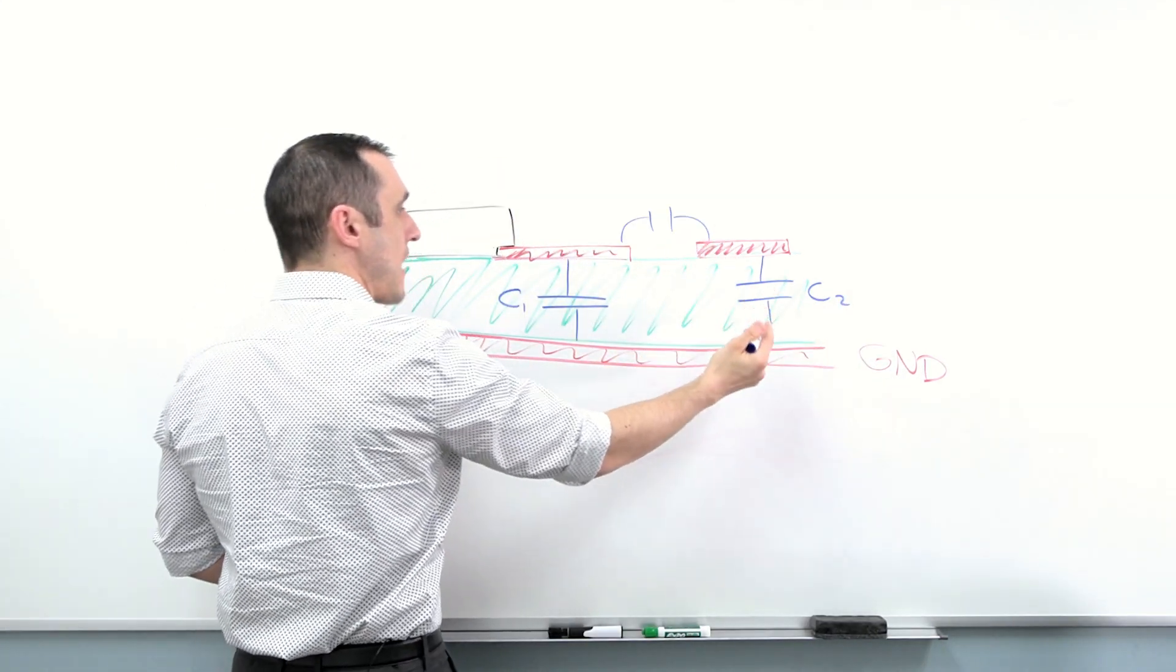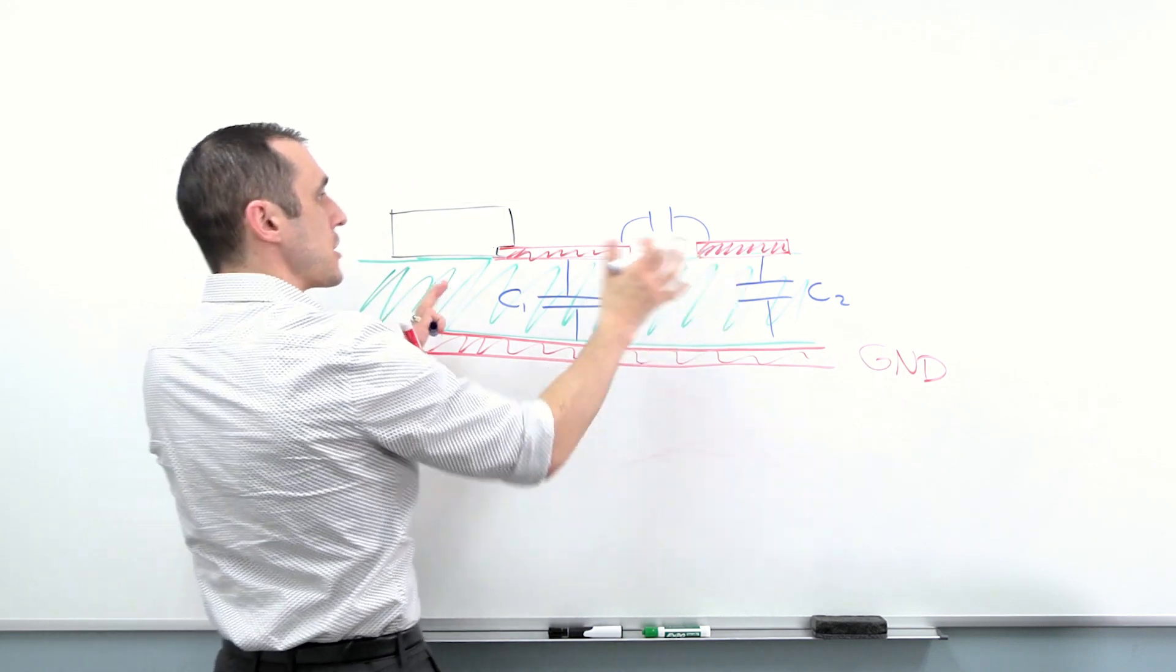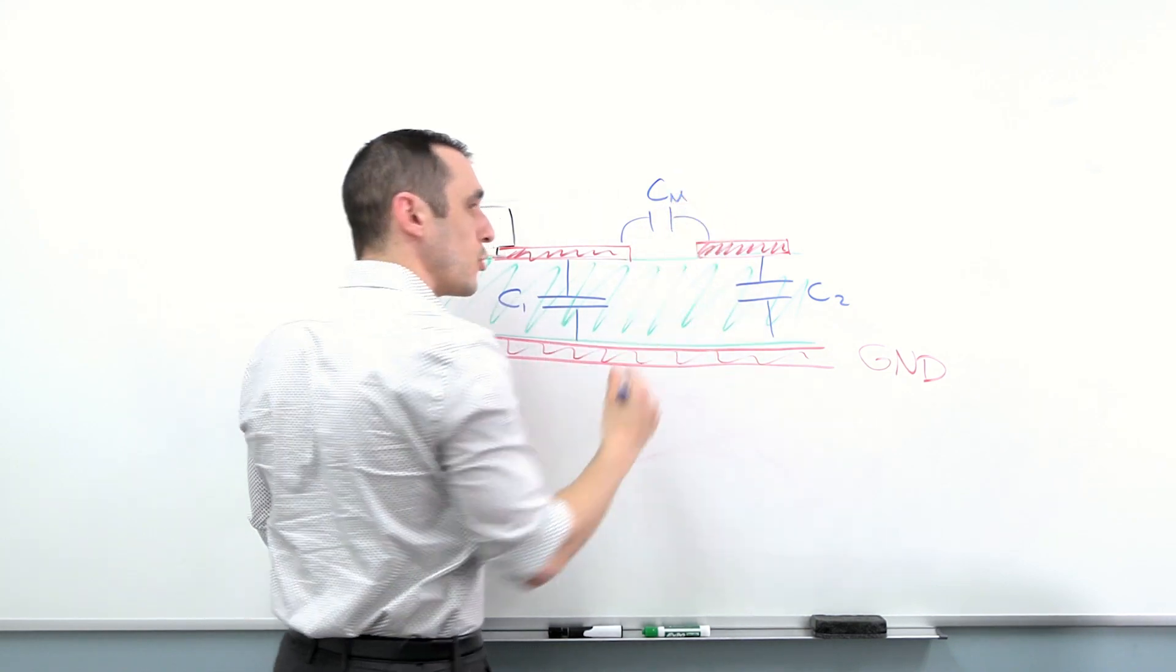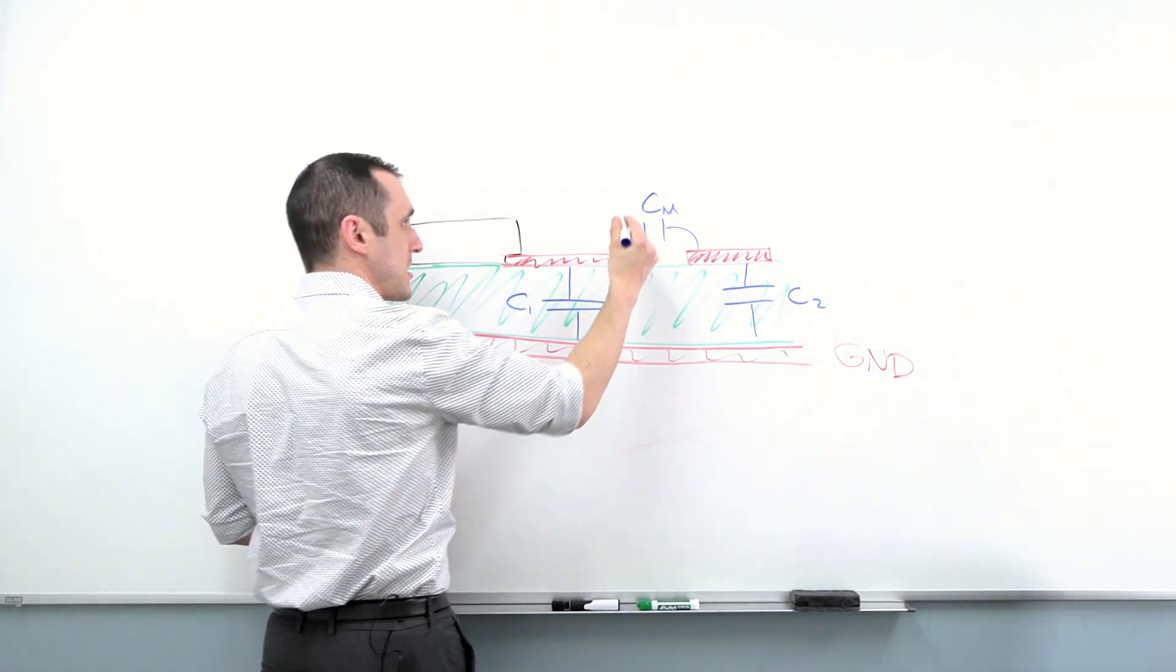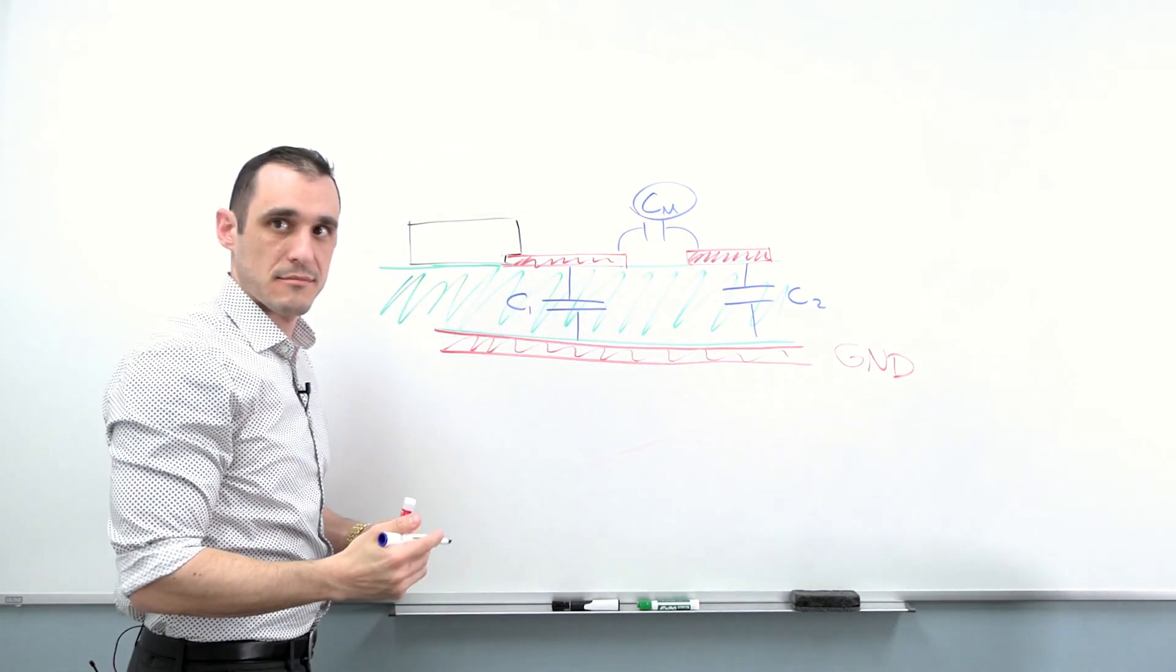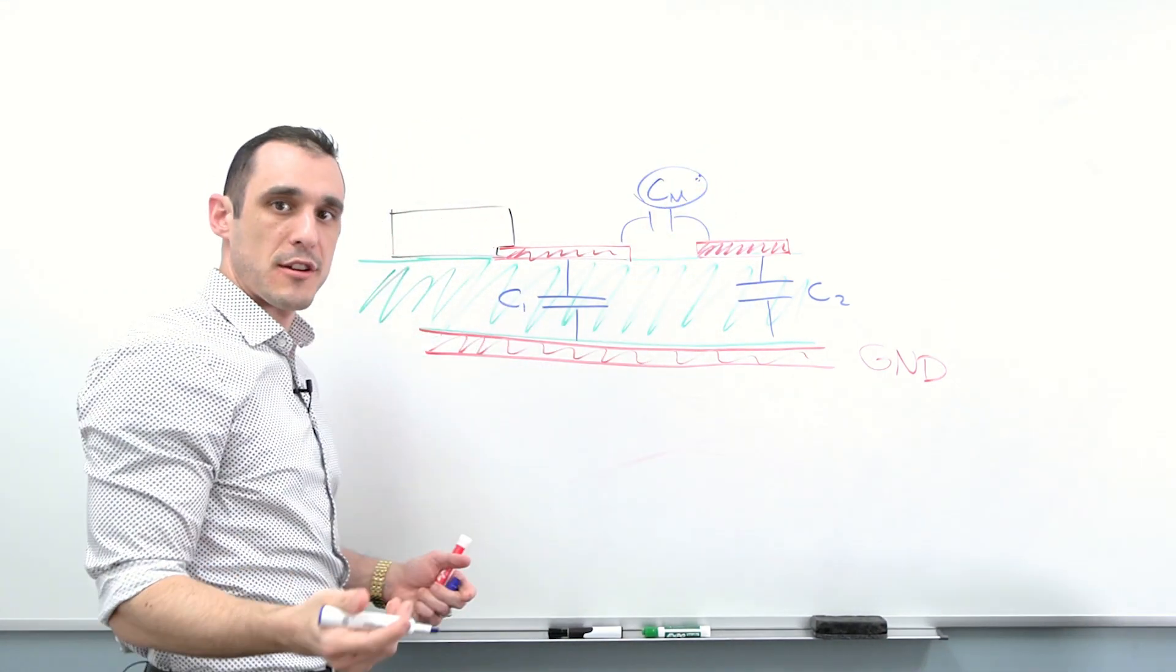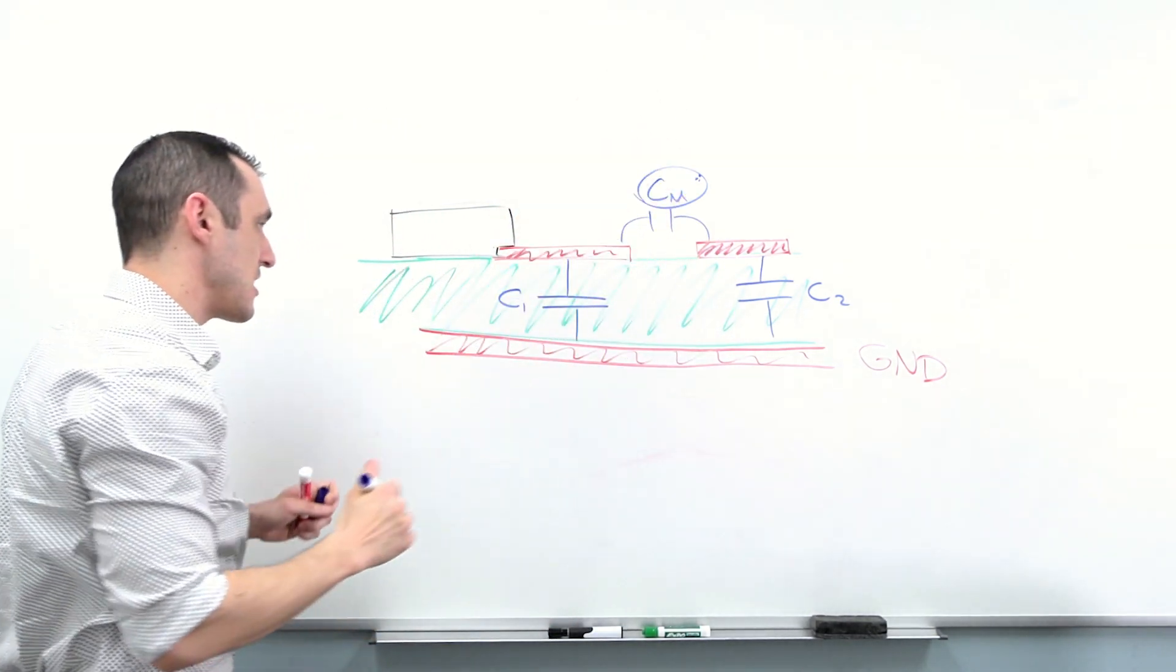Now because we have these two traces that are essentially near each other and have some capacitance between them, we typically will call this the mutual capacitance. So generally when people are referring to parasitic capacitance, they're referring to this. What are some strategies to eliminate this? Because when we want to reduce parasitic capacitance, the goal is essentially to make this go away and essentially not exist anymore.